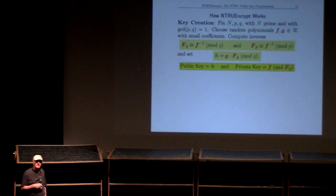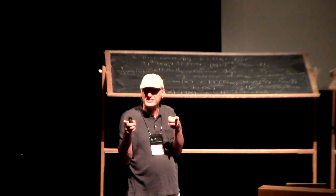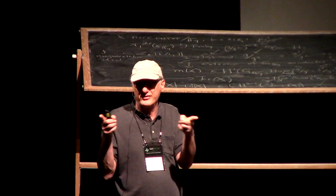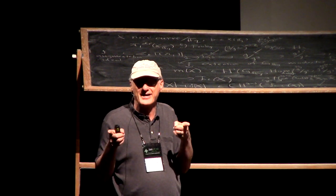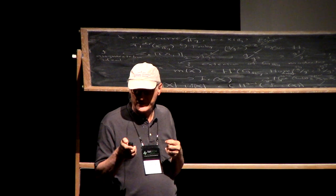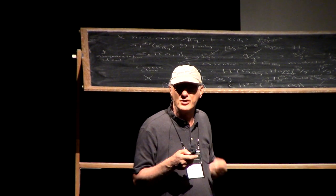And the nice thing here, you may notice, the public key is a single polynomial. It's a single vector. Rather than being a whole basis for a lattice, it's like giving one vector that'll be a basis for an n-dimensional lattice. Actually, a two-n-dimensional lattice, it'll turn out. And that's why the public keys are so much smaller.